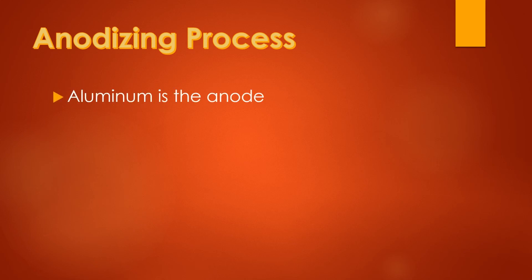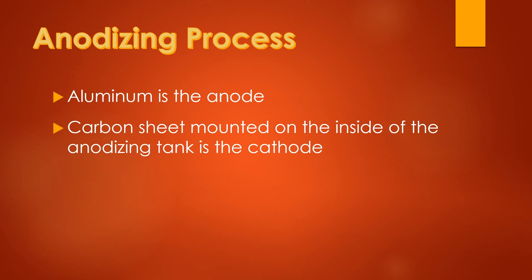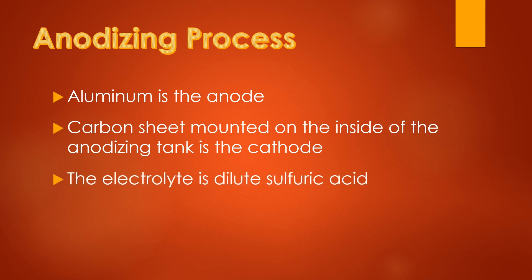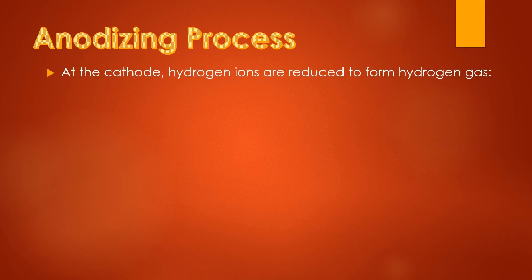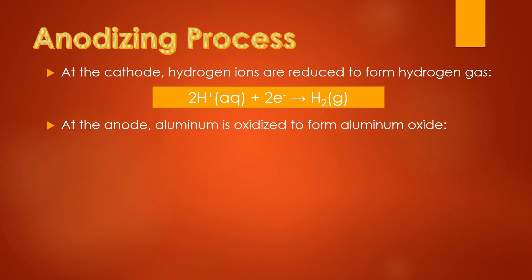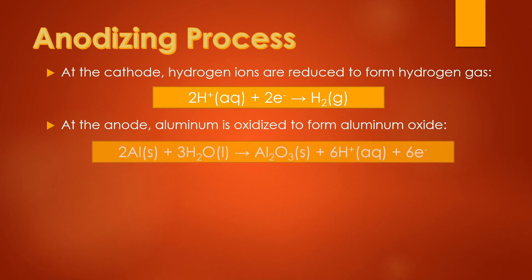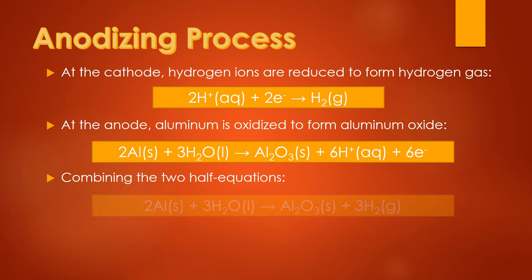In the anodizing process, aluminum is the anode. A carbon sheet mounted on the inside of the anodizing tank is the cathode. The electrolyte is dilute sulfuric acid inside the tank. A power supply supplies electricity to make the process work. At the cathode, hydrogen ions are reduced to form hydrogen gas. At the anode, aluminum is oxidized to form aluminum oxide. Combining the two half equations gives the overall equation.